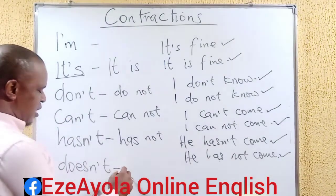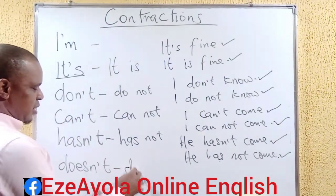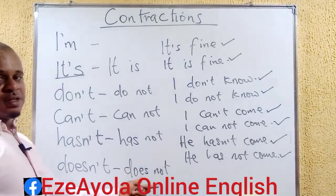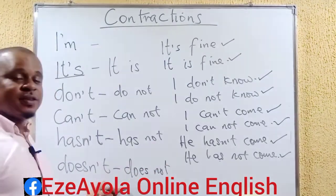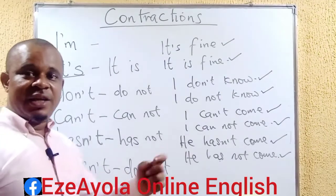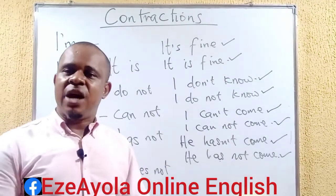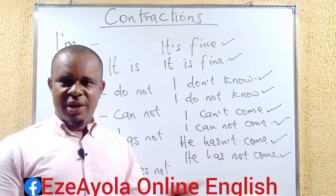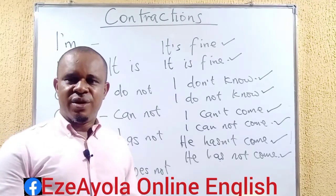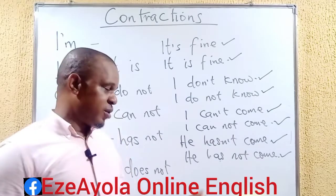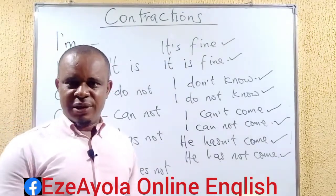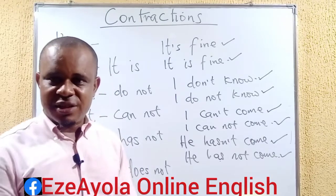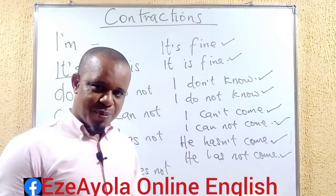Finally, 'doesn't' means 'does not'. 'He does not know' and 'he doesn't know' — whichever one, they are both correct. When you say 'he doesn't know', that becomes the contracted form. 'He does not know' is the full form. Very important.